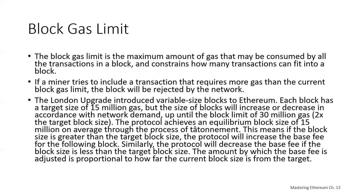Whereas for Ethereum, we're looking at how much gas that block is going to use in its transactions. If a miner tries to include a transaction that requires more gas than the current block gas limit, the block can be rejected by the network. This gives you another thing to think about: if you're doing something complicated in a transaction that's going to require a lot of gas, you might end up in a block with not many other transactions, which is something to consider in terms of how you're going to get your transactions picked up by the network.